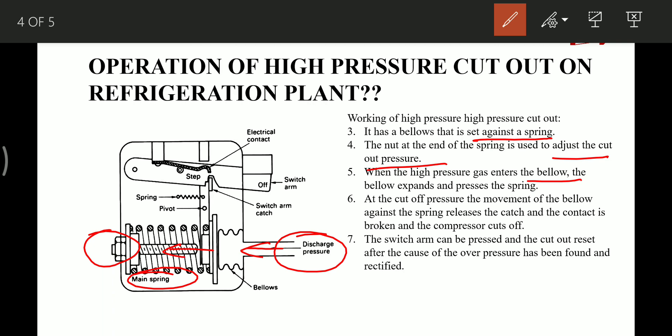At the cutoff pressure, when this cutoff pressure is reached, the movement of the bellow against the spring releases this catch arm and the contact is broken. This cuts off the compressor. The switch arm can be pressed and the cutout is reset after the cause of overpressure has been found and rectified.